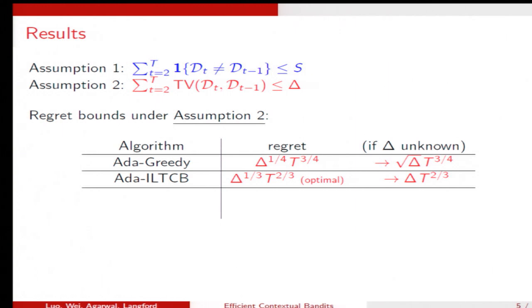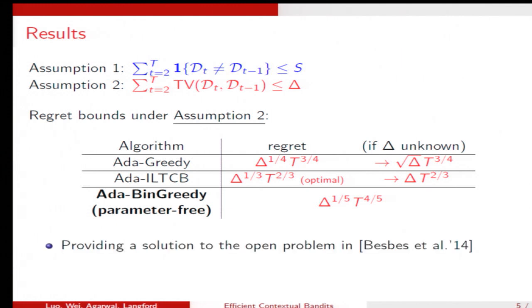Can we have a parameter-free algorithm that achieves some interpolating bounds like this? So we have another algorithm called Ada-BinGreedy. It has some guarantee like this. And this algorithm is providing a solution to the open problem as in this paper.